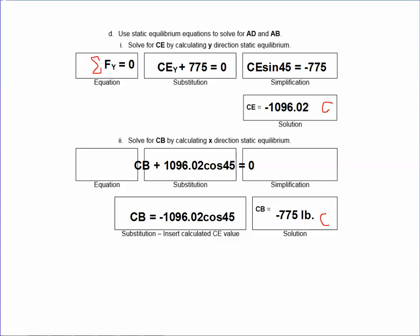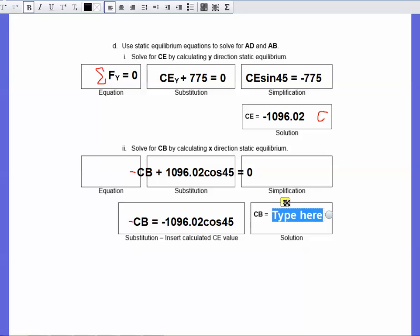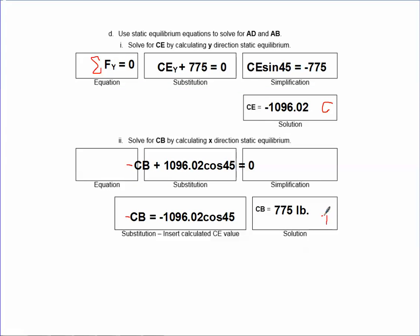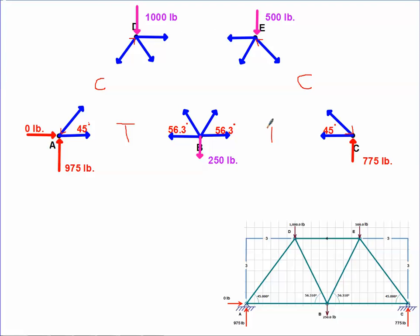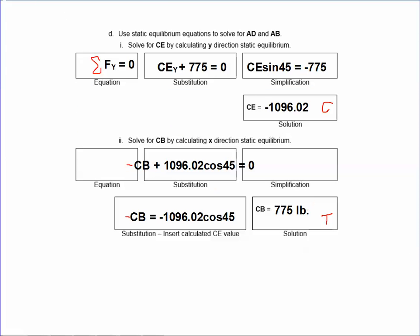I need to correct something — CB is pointing to the left, so it should carry a negative sign in the equation. That actually makes CB a positive value, meaning the member is in tension, not compression. So I apologize for any confusion. The rule is: don't put a sign on an unknown member unless you know the direction it's pointing. CB is in tension. Four members are solved, three more to go.